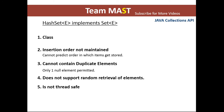Next, we have HashSet, which is a class that implements the set interface. A key property of HashSet is that insertion order is not maintained. You cannot predict in which order items will be stored in a HashSet. For example, if you insert 1, 2, and 3, when you print the values they may come out as 3, 2, 1 or 2, 3, 1 — any order. HashSet cannot contain duplicate elements, does not support random retrieval of elements, and is not thread safe.